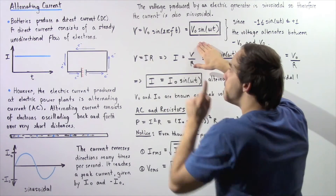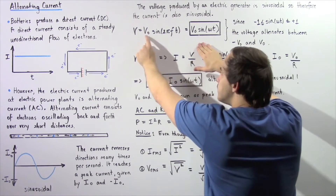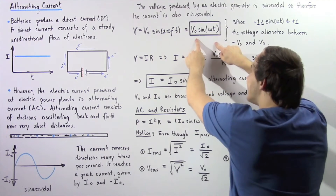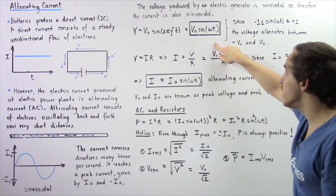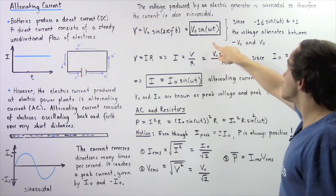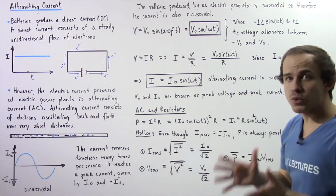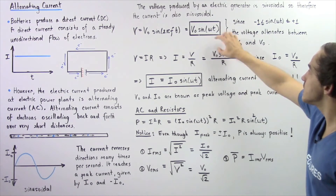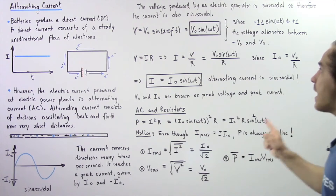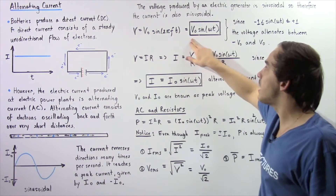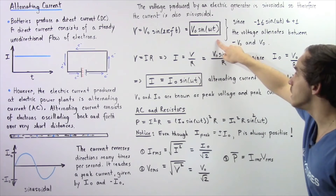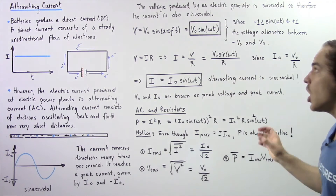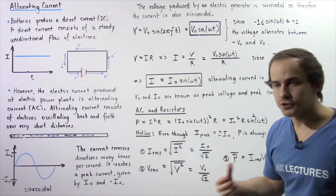Why is the maximum voltage given by V₀? Examining the sine term: sine has a maximum value of positive 1 and a minimum value of negative 1, so sine of anything always ranges between −1 and +1. That means when sine equals +1, the highest voltage is V₀, and when sine equals −1, the lowest voltage is −V₀. These are known as the peak voltages.